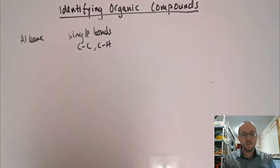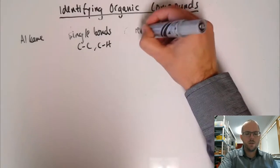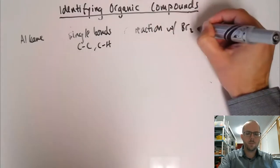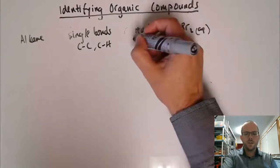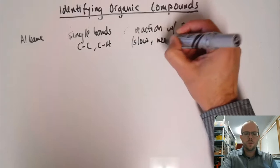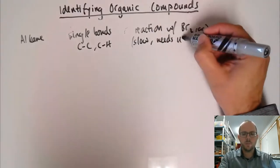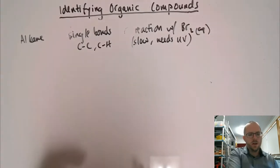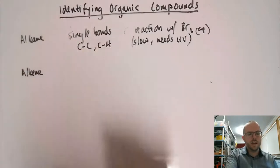A distinguishing test for this that we're going to carry out is a reaction with aqueous bromine, also known as bromine water. This reaction with aqueous bromine water is slow and needs UV light to occur. That's the distinguishing test between that and alkenes.